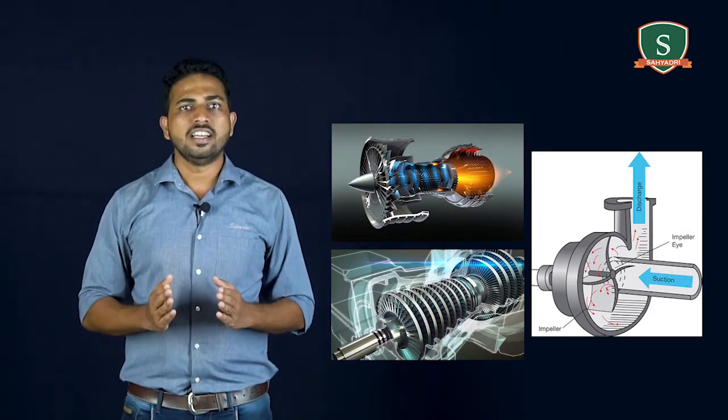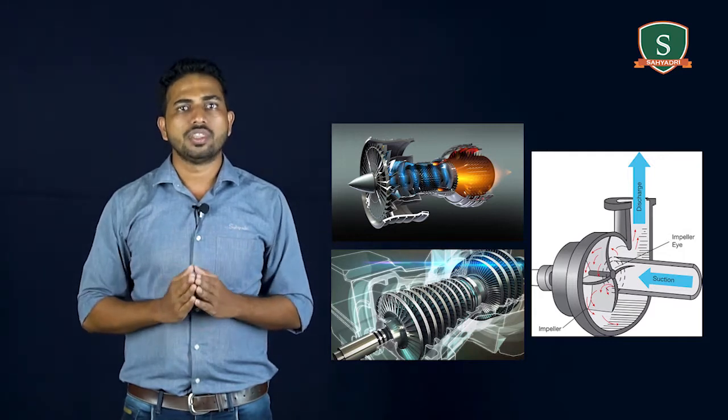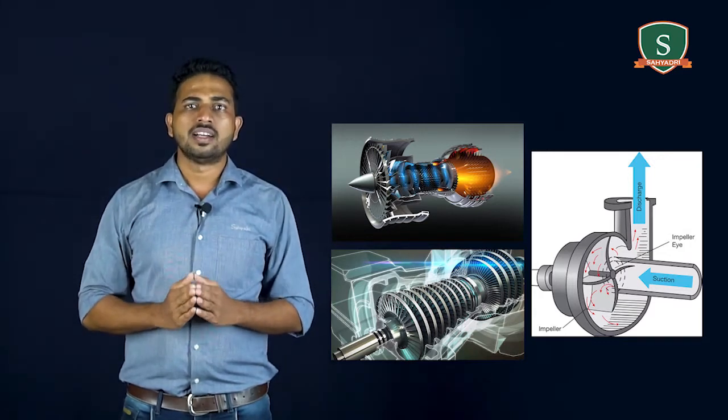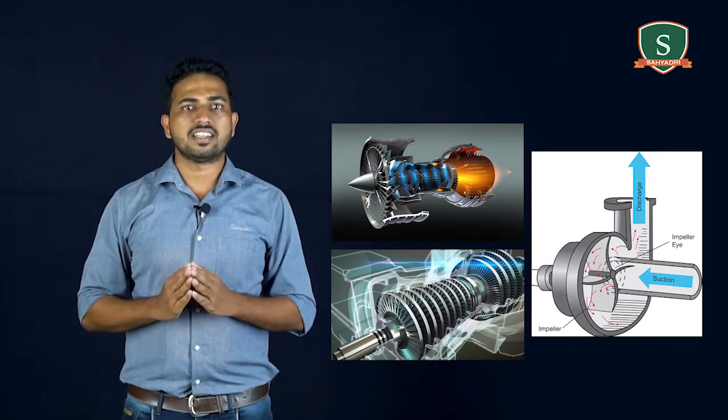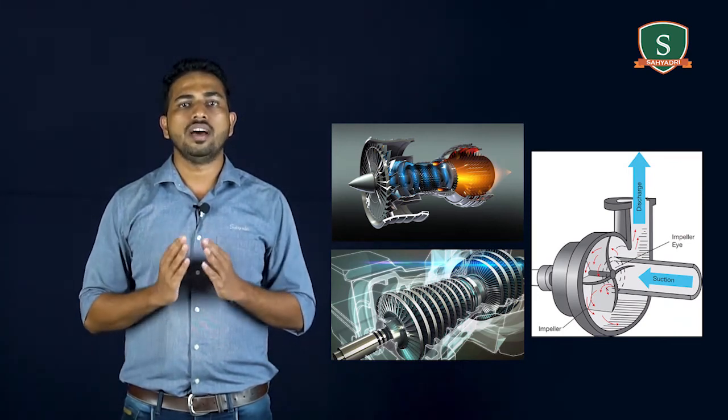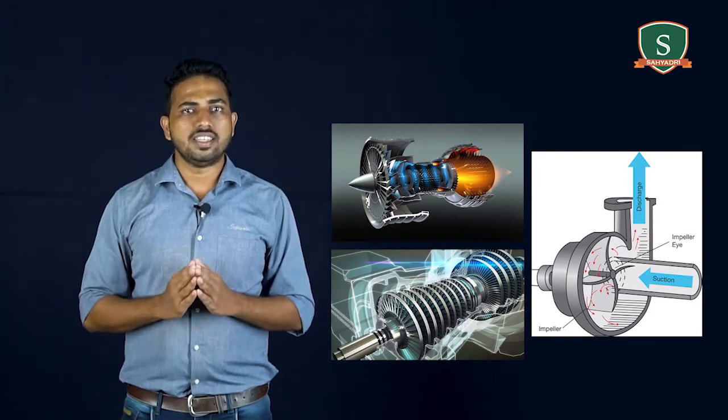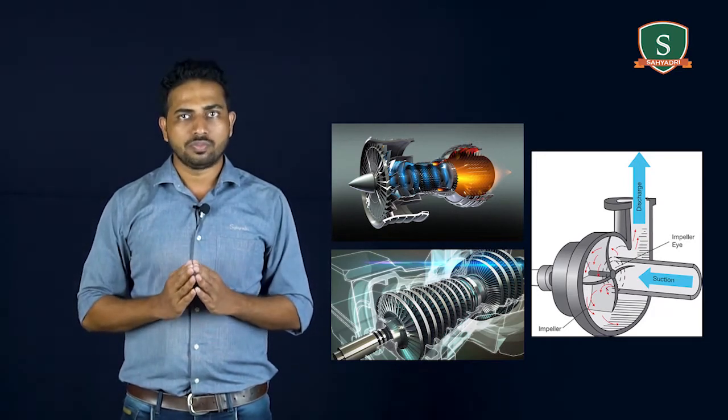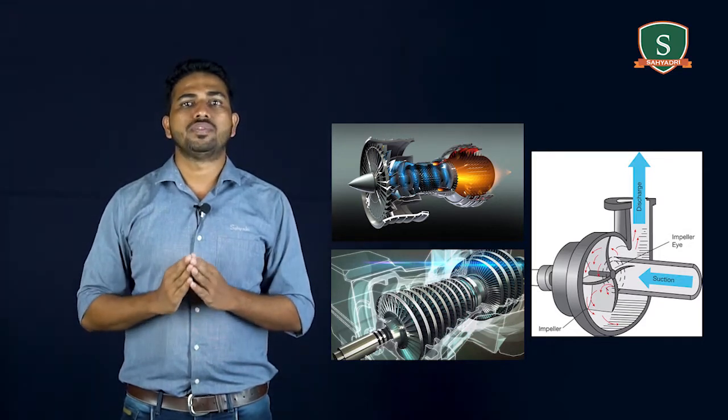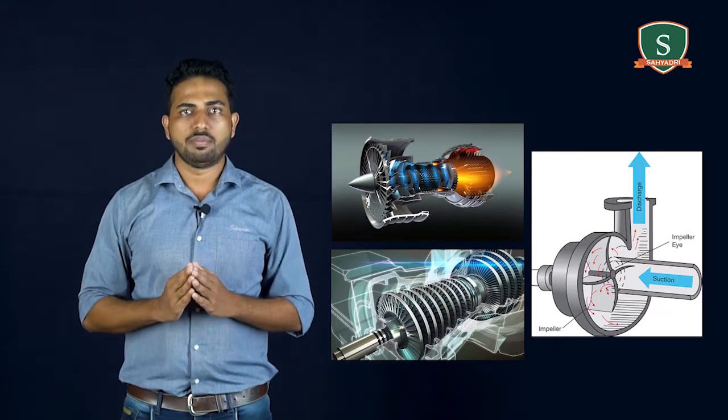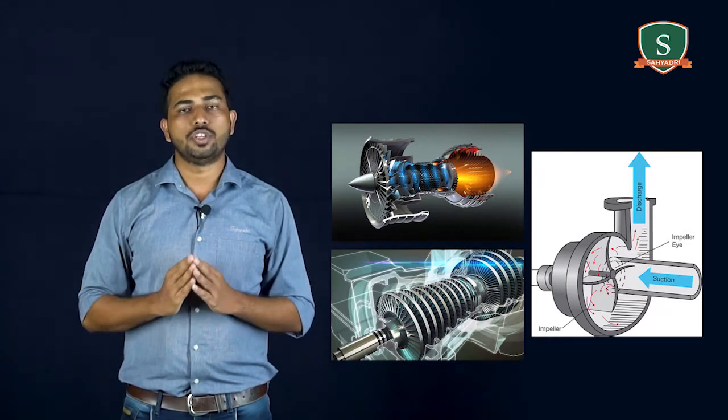The mechanical energy, on the other hand, is usually transmitted by a rotating shaft. The word turbo or turbinis is of Latin origin and implies that which spins or whirls around. Essentially, a rotating blade row, a rotor, or an impeller changes the stagnation enthalpy of the fluid moving through it by either doing positive or negative work.